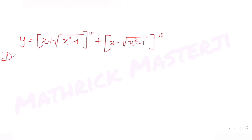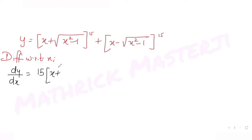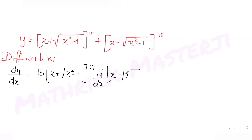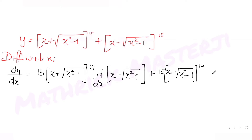Differentiating with respect to x, dy/dx = 15·(x + √(x²-1))^14 · d/dx[x + √(x²-1)] + 15·(x - √(x²-1))^14 · d/dx[x - √(x²-1)].